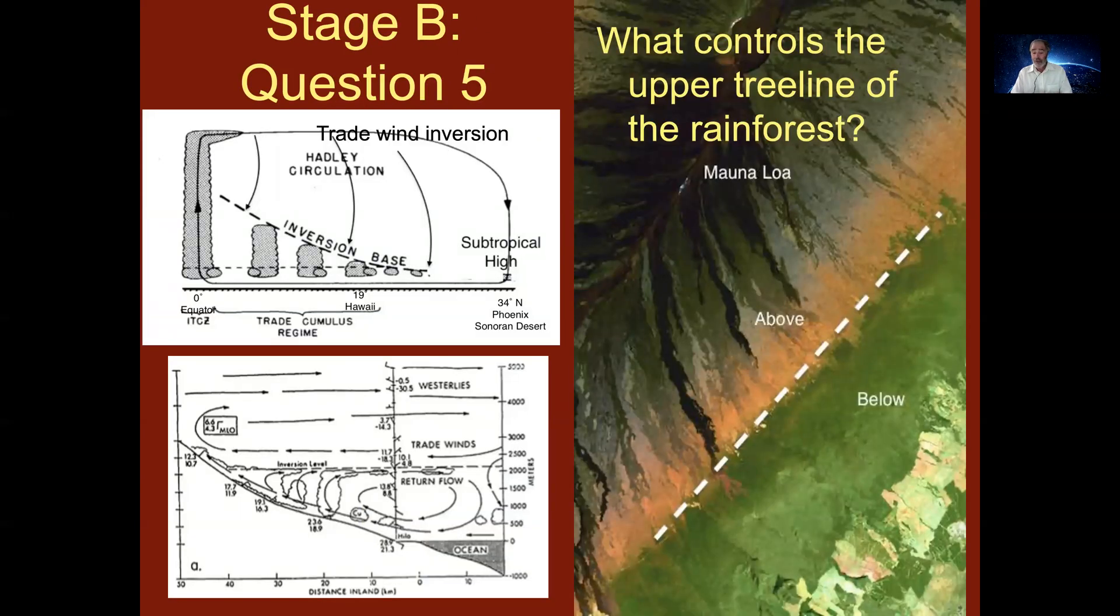In particular, we're focusing on the Big Island of Hawaii and you're looking at a Landsat image from NASA of the Mauna Loa volcano. You can almost draw a line where there's a rainforest below the tree line and there's desert above the tree line.